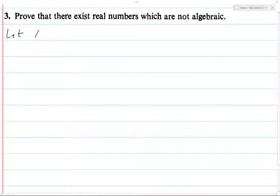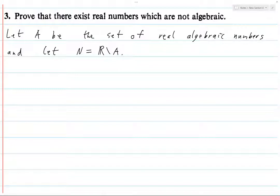So let A be the set of real algebraic numbers. So this is the intersection of the set of algebraic numbers with the real numbers. And let N be R \ A. So then N is the set of non-algebraic numbers.